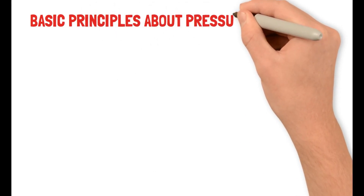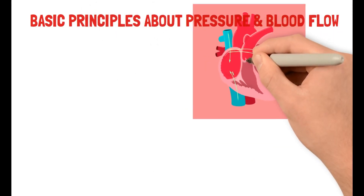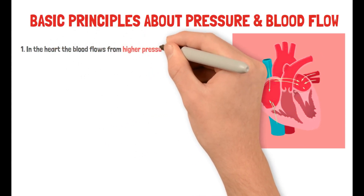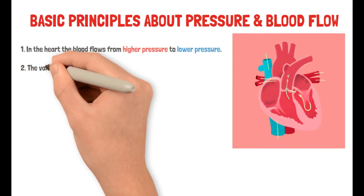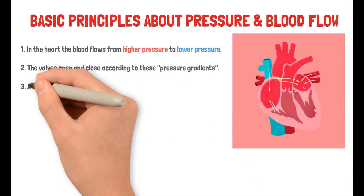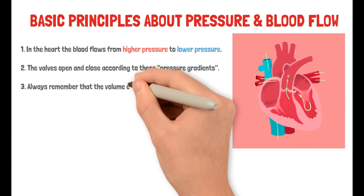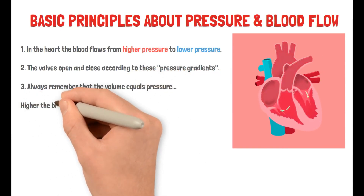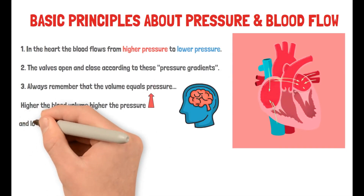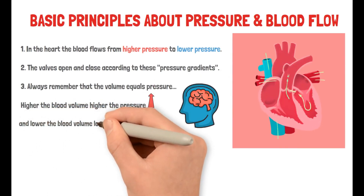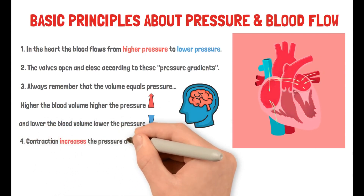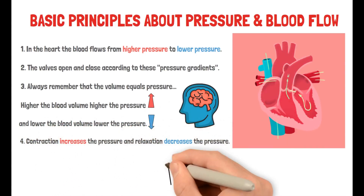Now let's talk about the basic principles about pressure and blood flow. First of all, in the heart the blood flows from higher pressure to lower pressure. Similarly, the valves open and close according to these pressure gradients. Always remember that volume equals pressure — higher the blood volume, higher the pressure; lower the blood volume, lower the pressure. And finally, contraction increases the pressure and relaxation decreases the pressure.